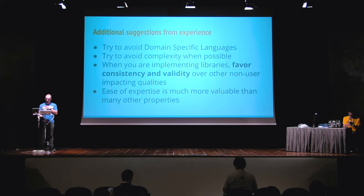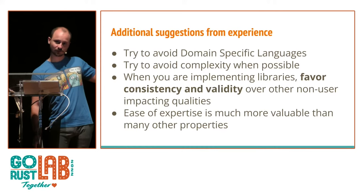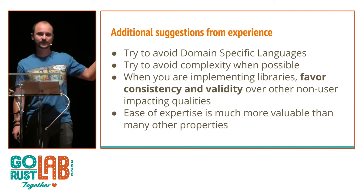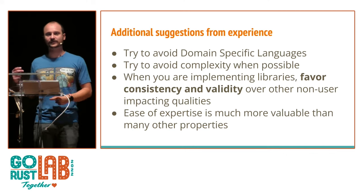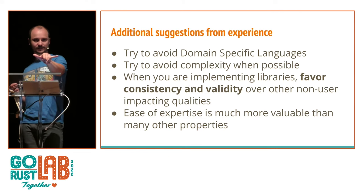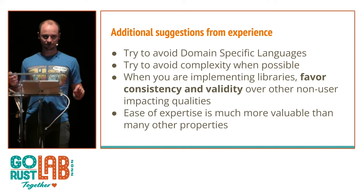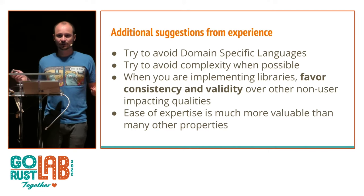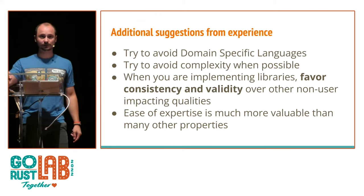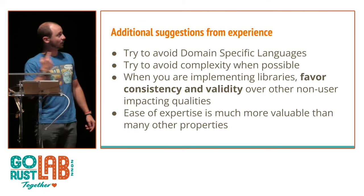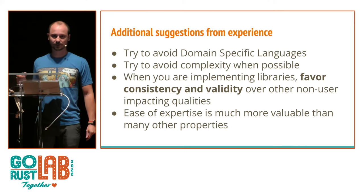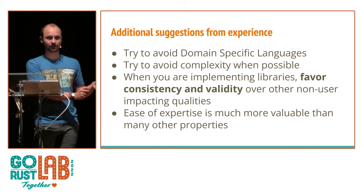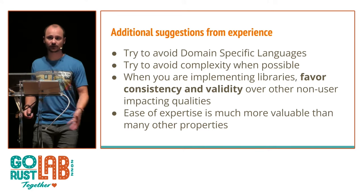These are my personal suggestions. Don't use DSLs — domain-specific languages. I've seen a lot of people use testing frameworks that allow you to write sentences that compile to Go but look like natural language. When you're trying to debug those tests, you get very nice poetry but nothing that looks like code. When you get surprising behavior, you not only need to learn the language but also the library — and hope that the library is consistent, because not every library implementation follows consistency. Making your library easy to become an expert on is much more valuable than making it smart.